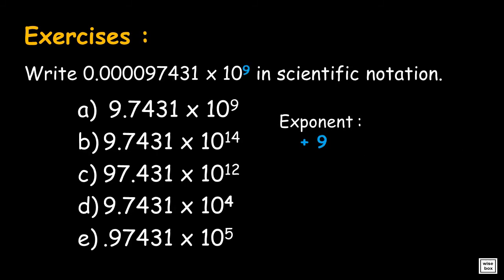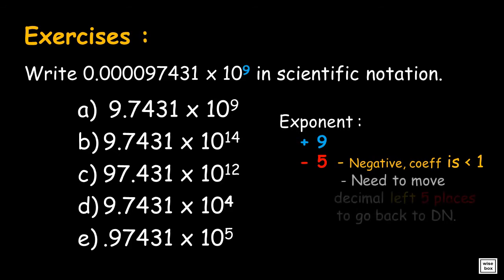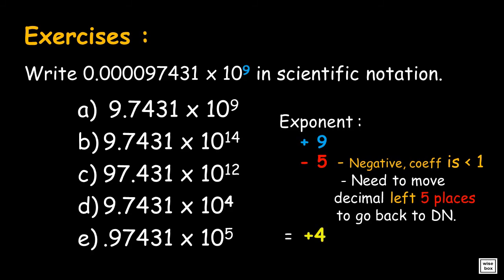Write 0.0000097431 times 10 to the power 9 in scientific notation. Since the coefficient is less than 1, the resulting exponent must be negative. You need to move the decimal left 5 places to go back to the number, then combine 9 and minus 5. So the final exponent is positive 4. Answer is 9.7431 times 10 to the power 4.